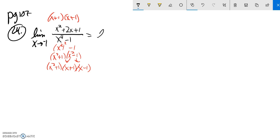Let me rewrite this statement. There's a lot of stuff going on there. So x is approaching negative 1. My numerator factors to x plus 1 times x plus 1. My denominator factors to x squared plus 1 times x plus 1 times x minus 1.